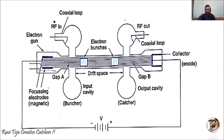To summarize the three components: first is the glass tube or vacuum tube; second is the supply, where the electron gun is connected to the negative terminal and the positive terminal is connected to the anode or collector; and third are the cavities — cavity one is the input cavity or buncher where RF signals are given as input, and cavity two is the output cavity or catcher where the amplified radio frequency is collected as output.